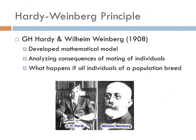Gregor Mendel showed us that truly understanding evolution requires a mathematical approach. And in the early 20th century, two thinkers came up with a mechanism for beginning to wrap their heads around what evolution really is. What's crazy is they came up with the same idea at the same time, but they didn't even know the other person existed. This tends to happen more than you'd think in science.